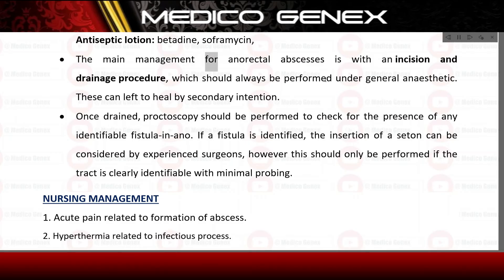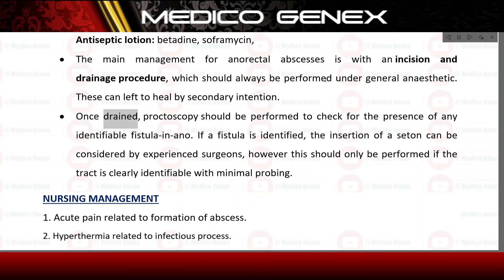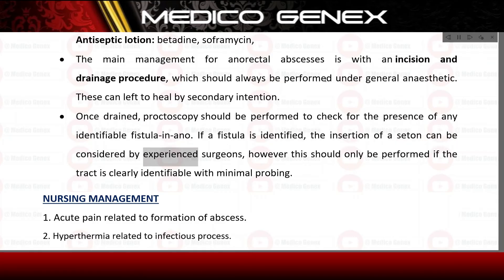The main management for anorectal abscesses is an incision and drainage procedure, which should always be performed under general anesthetic. These can be left to heal by secondary intention. Once drained, proctoscopy should be performed to check for any identifiable fistula. If a fistula is identified, the insertion of a seton can be considered by experienced surgeons, but only if the tract is clearly identifiable with minimal probing.